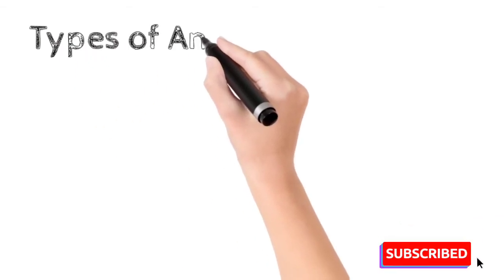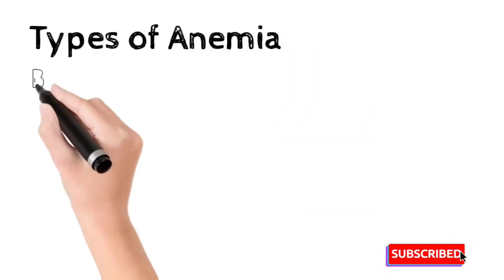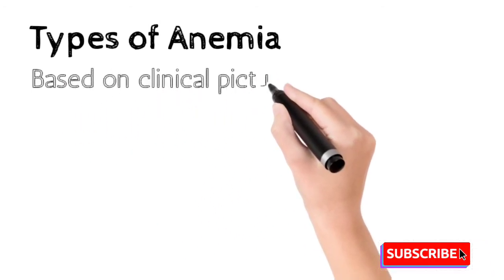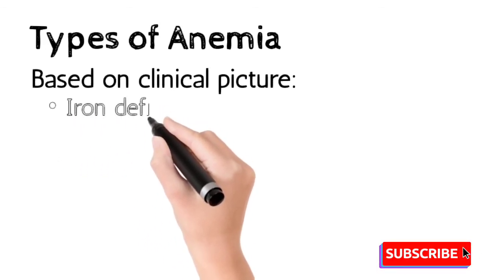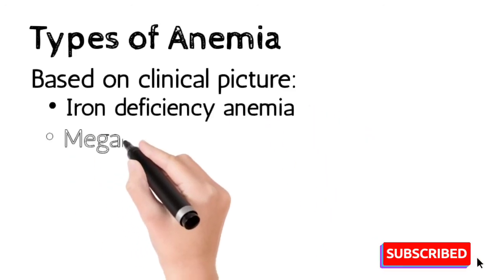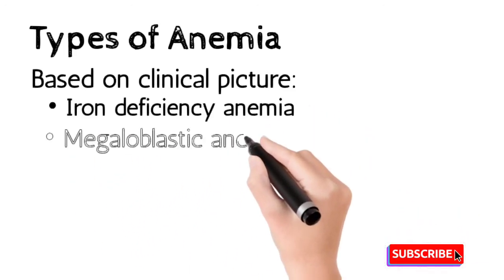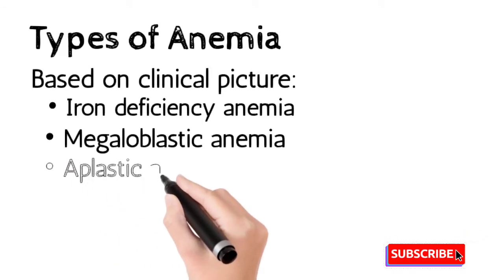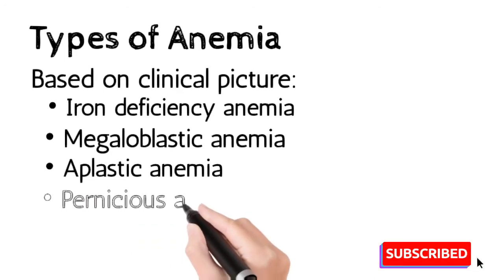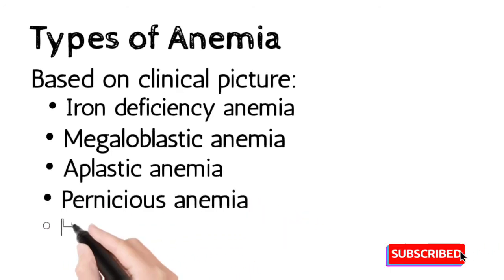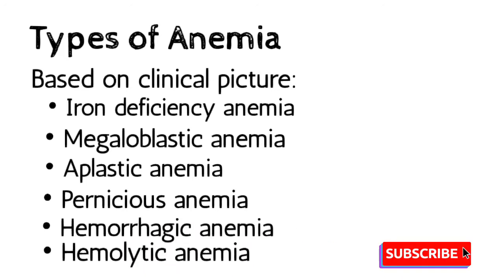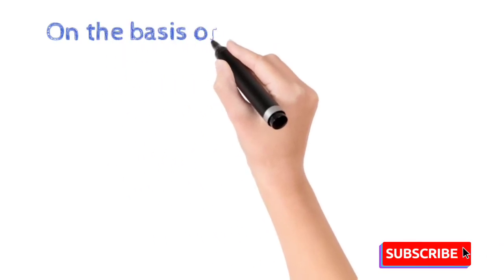The types of anemia, based on the clinical picture: number one is iron deficiency anemia, caused by insufficient supply of iron to the body. Second is megaloblastic anemia, during which larger-size blood cells are formed. Third is aplastic anemia, due to bone marrow dysfunction. Fourth is pernicious anemia, due to vitamin B12 deficiency. Fifth is hemorrhagic anemia, due to blood loss. Sixth is hemolytic anemia, due to lysis of RBCs.